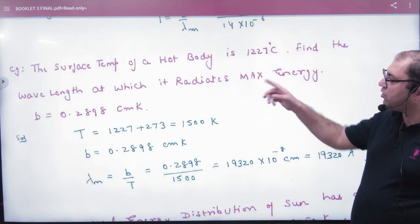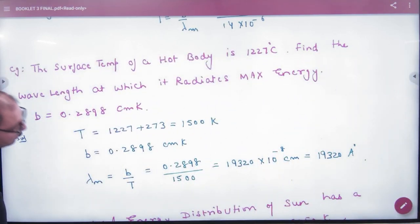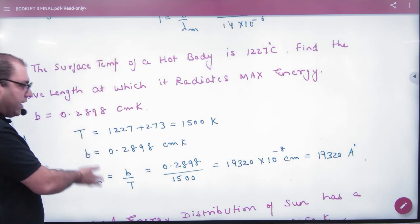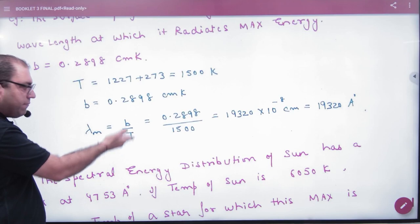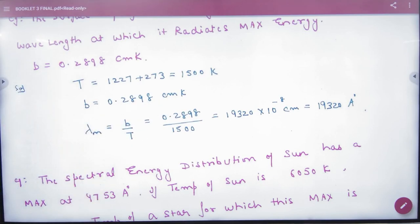Surface temperature of a hot body is 1227°C, converted to 1500 Kelvin. Find the wavelength at which it radiates maximum energy, lambda M. So lambda into T is a constant. The temperature is given. We also know lambda M's value. It is simple.